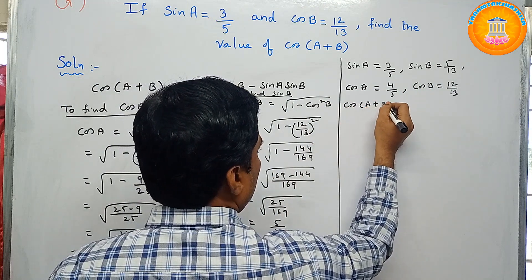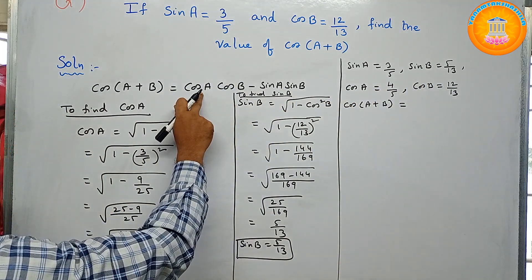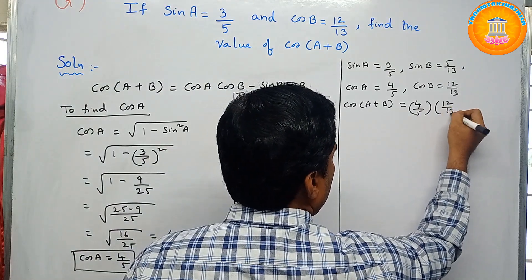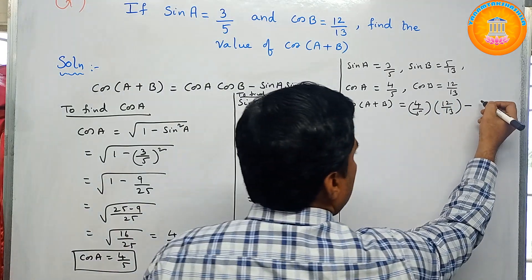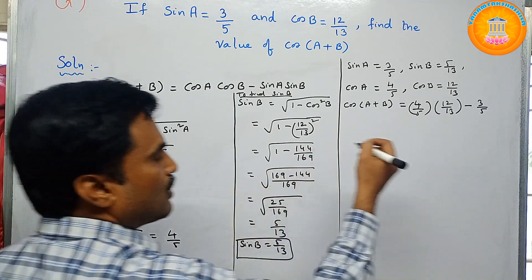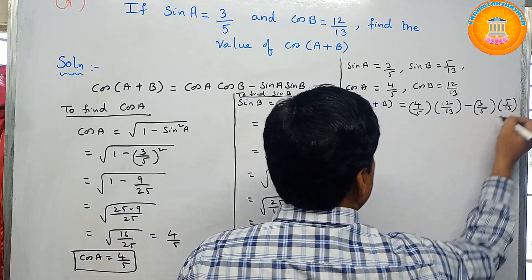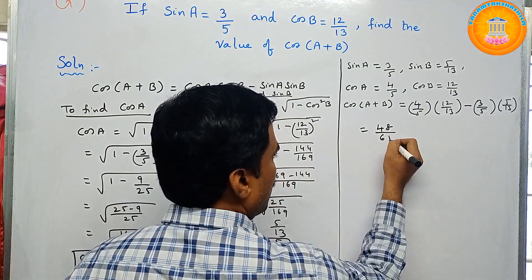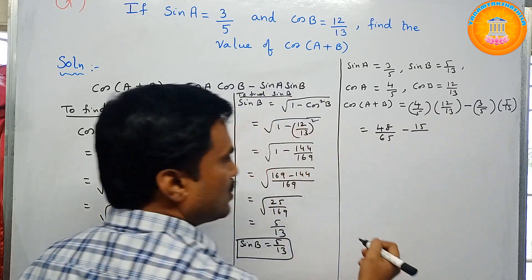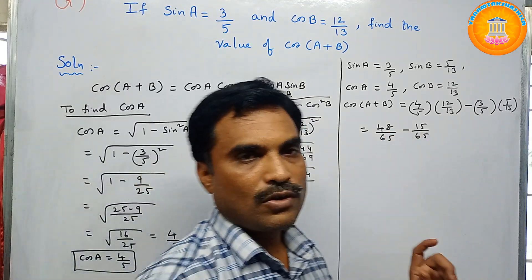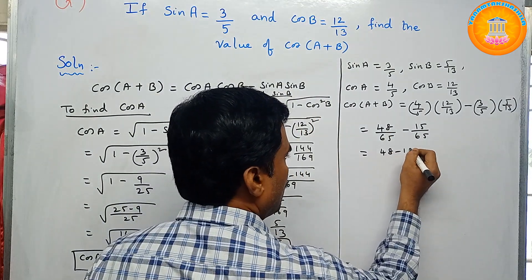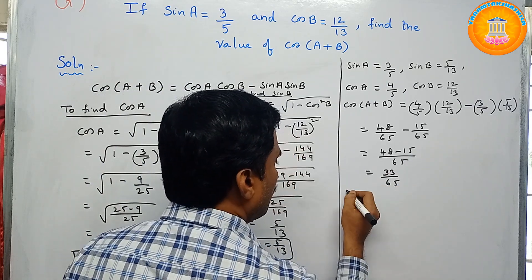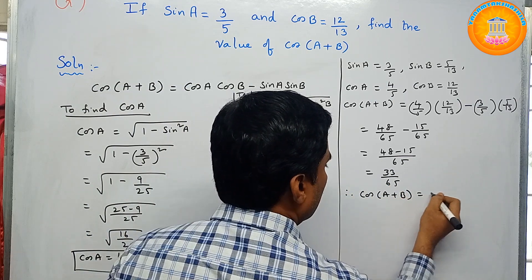So cos of a plus b equals cos a times cos b minus sin a times sin b. Substituting: (4 by 5) times (12 by 13) minus (3 by 5) times (5 by 13). This gives 48 by 65 minus 15 by 65. Since the denominators are the same, subtract the numerators: 48 minus 15 equals 33. Therefore cos of a plus b equals 33 by 65.